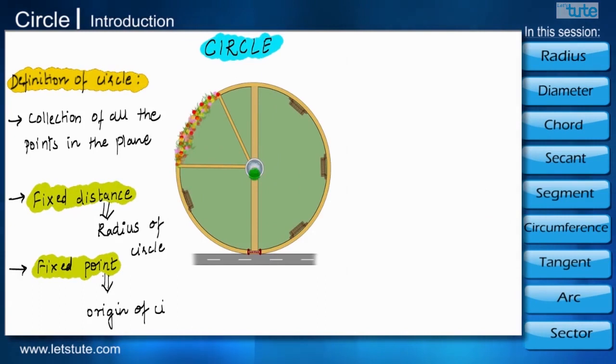The fixed point is called the origin of the circle and the fixed distance is called as the radius. If you see, there is a path which connects the fountain and the entrance gate. This path can be called as the radius.